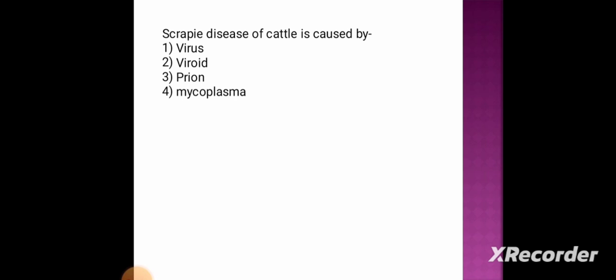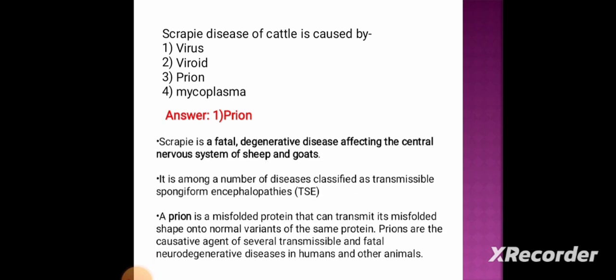Next question: scrapie disease of cattle is caused by — option 1: virus, option 2: viroid, option 3: prion, option 4: mycoplasma. The correct answer is prion. Scrapie is a fatal degenerative disease affecting the central nervous system of sheep and goats, classified as a transmissible spongiform encephalopathy. A prion is a misfolded protein that can transmit its misfolded shape onto normal variants of the same protein, and prions are the causative agents of several transmissible and fatal neurodegenerative diseases in humans and other animals.